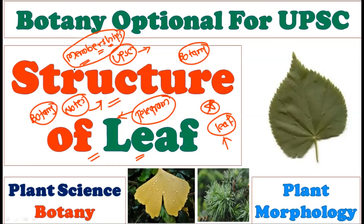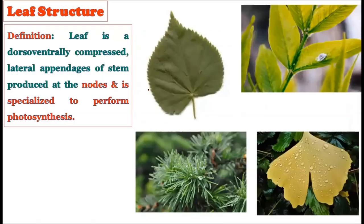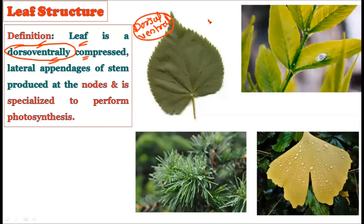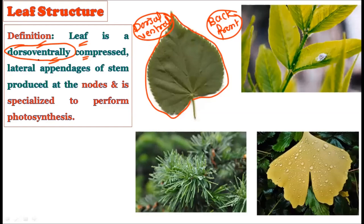Let us begin with the structure of the leaf. Consider the definition of the leaf. The leaf is the dorsiventrally compressed structure. Dorsiventrally compressed means from the dorsal side and the ventral side — from both sides — the leaves are compressed. Whether it is the back side or the front side, the majority of the time it is flattened from both sides. That is why we use the word dorsiventrally compressed to explain the leaf.